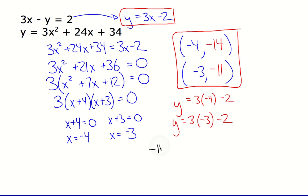I could check and see: does negative 14 equal 3 times negative 4 squared plus 24 times negative 4 plus 34? And I put the question mark over the equal sign because I don't know if it equals it yet. That's why I'm checking it. So negative 4 squared would be 16, and 16 times 3 is 48. 24 times negative 4 would be negative 96.